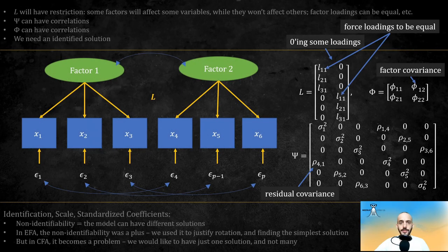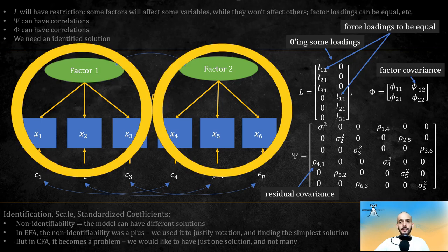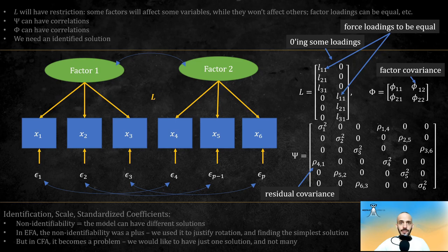This is how the graph will look like now. Notice that now each of the factors affect their own set of variables. They don't affect the same variables. Also notice that there can be correlations between factors and between the epsilons. These are represented by a two-headed curved arrow. We can also force the loadings to be equal in the loading matrix. Basically, we added restrictions to the EFA model that corresponds to our theoretical model.